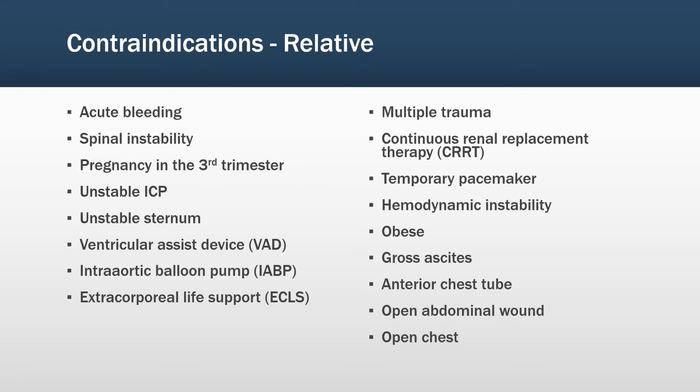Contraindications to placing a patient in the prone position are mostly related to the potential for complications related to the position the patient is placed in and the potential for dislodgement of tubes. The contraindications are also generally relative as we become more comfortable with the proning procedure and many of the negative sequelae have been mitigated. For example, an article in the Intensive and Critical Care Nursing Journal in October 2018 reviewed the safety of proning patients with Veno-Venous ECMO and found that it was a safe and reliable technique when performed in a recognized ECMO center with appropriately trained staff and standard procedures. In all cases, the risk benefit to the patient must be considered and if proning is deemed to be beneficial, any potential risks should be managed safely.